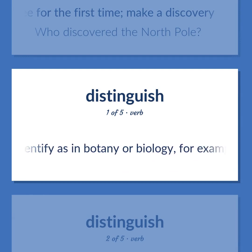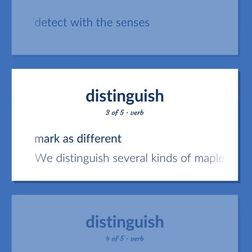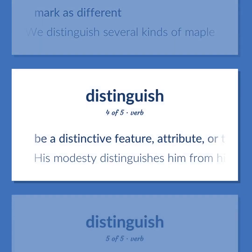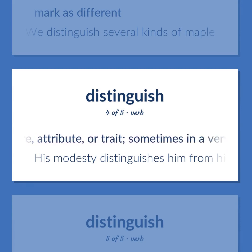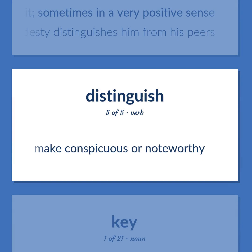Distinguish: Identify as in botany or biology, for example. Detect with the senses — 'Mark is different.' 'We distinguish several kinds of maple.' Be a distinctive feature, attribute, or trait, sometimes in a very positive sense — 'His modesty distinguishes him from his peers.' Make conspicuous or noteworthy.